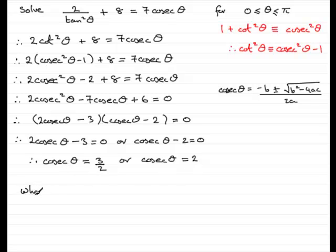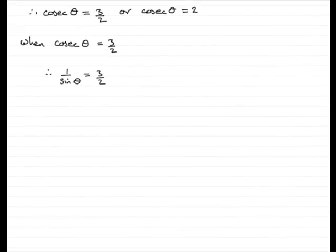So we'll come down here and say when cosec theta equals 3 over 2. Now when cosec theta equals 3 over 2, cosec is 1 over sine theta. So we've therefore got 1 over sine theta equals 3 over 2. And if I rearrange this, I will get sine theta equals 2 thirds.